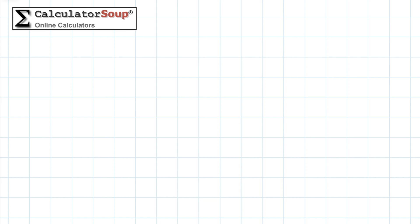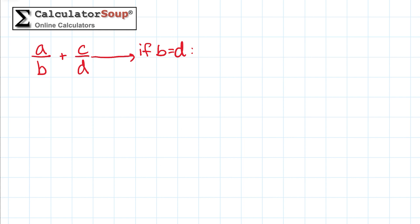To start, let's write down the fractions we want to add. Before we use real numbers, we'll use some placeholder fractions: a over b, and c over d. If the denominators are the same, or if b equals d, you add the top numbers together — a plus c — and put the result over the common denominator, b or d. Then simplify the answer after adding the fractions if needed.